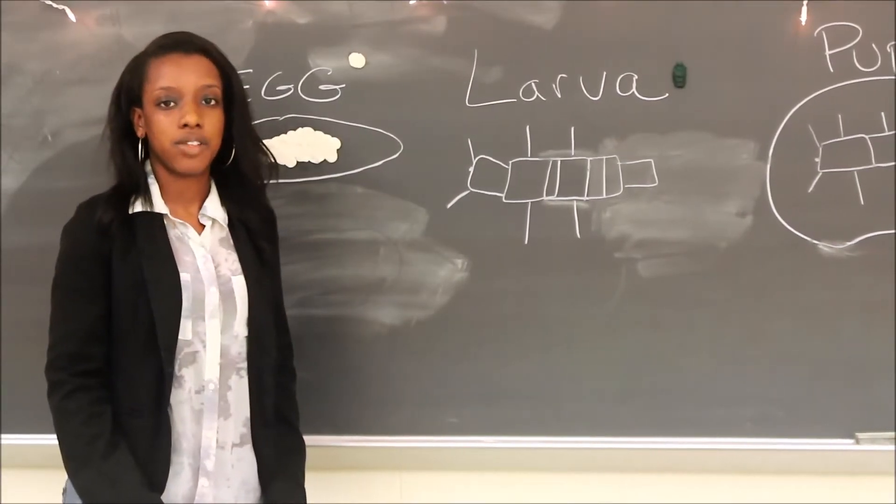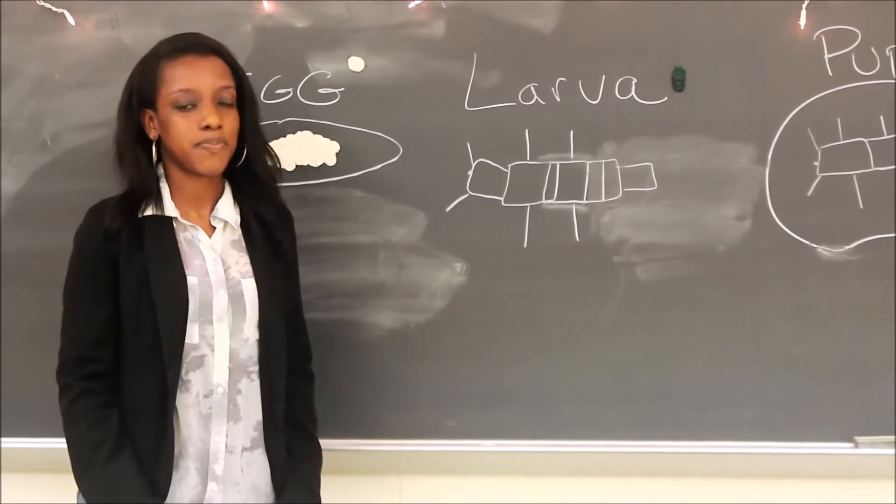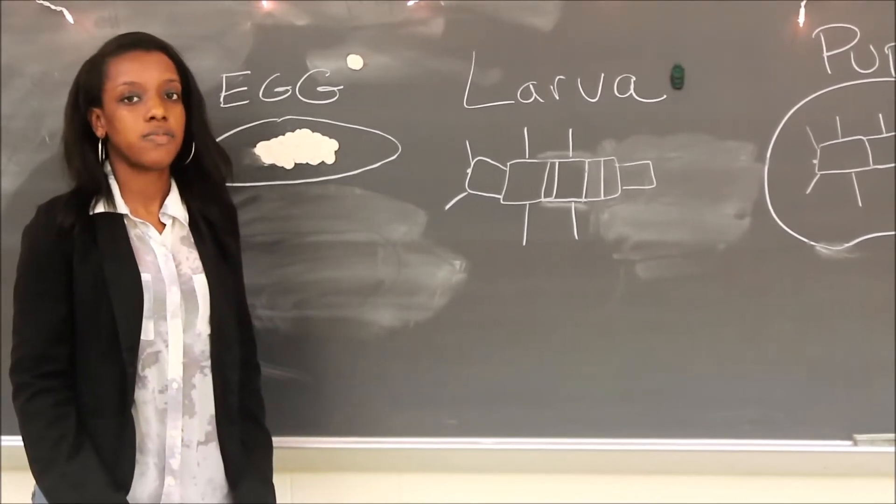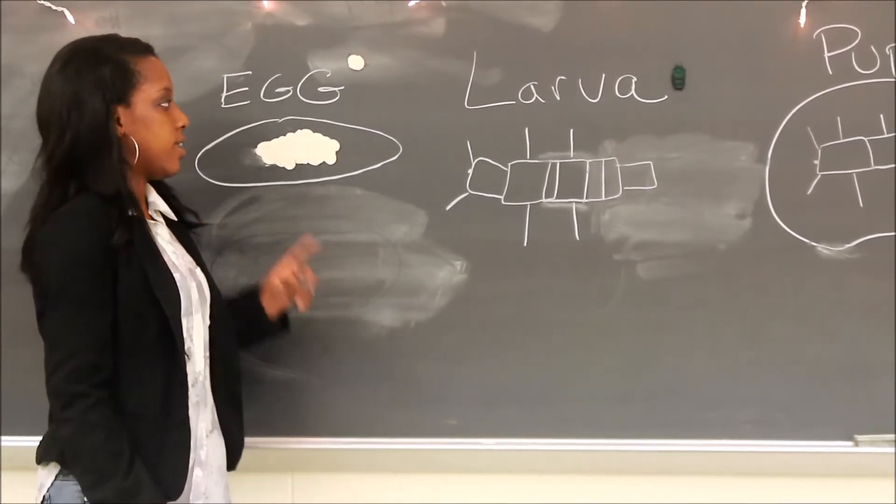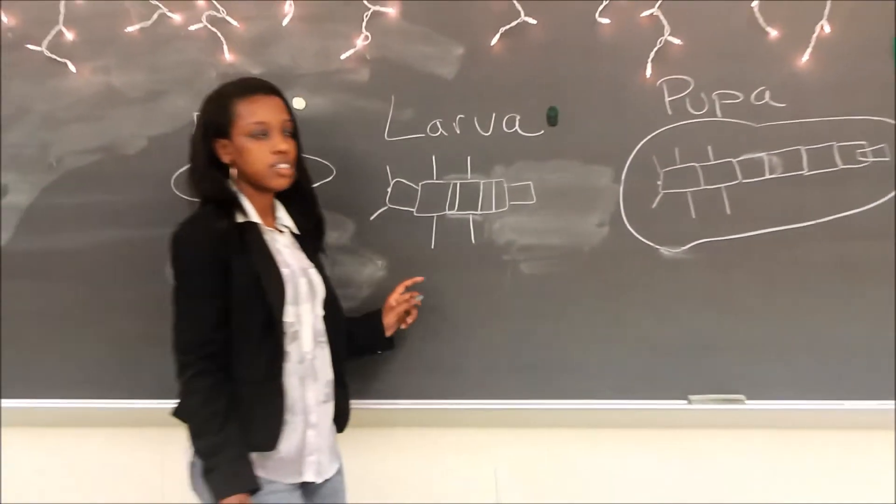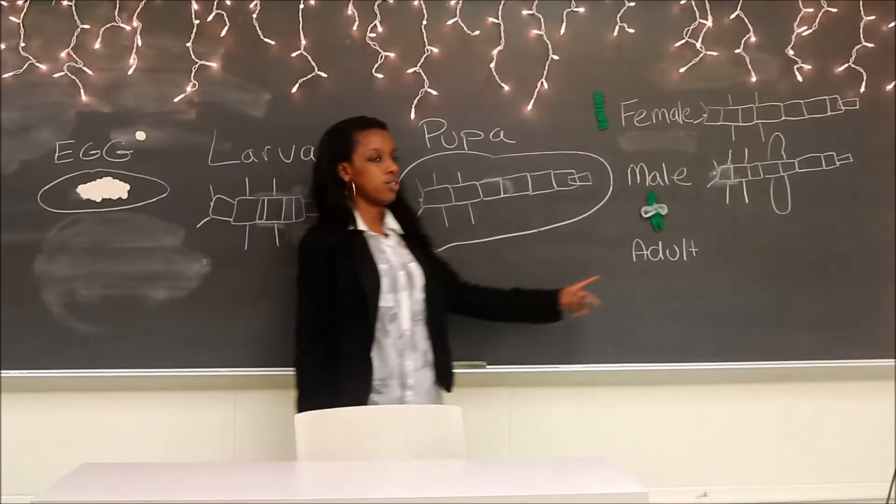We will begin the life cycle of the New Zealand glowworms. These glowworms have four different stages: the egg stage, the larva stage, the pupa stage, and the adult stage.